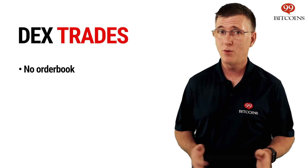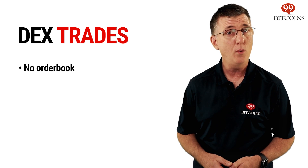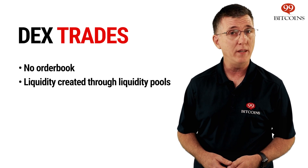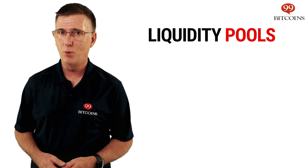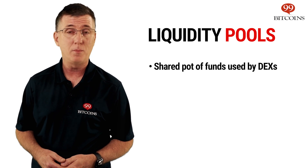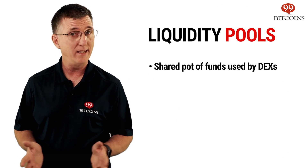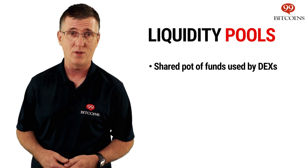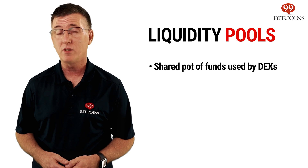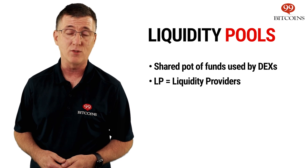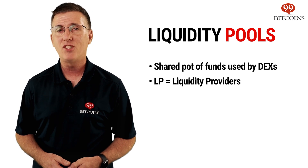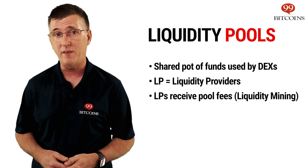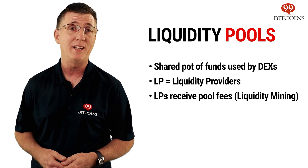DEXs, on the other hand, don't store any user funds and have no order book. Liquidity on DEXs is created through liquidity pools — a shared pot of funds deposited by the general public — which DEXs use in order to fulfill buy and sell orders. People who deposit funds in liquidity pools are known as liquidity providers, or LPs. In exchange for the locked funds, LPs receive a part of the DEX's trading fees in a process known as liquidity mining.